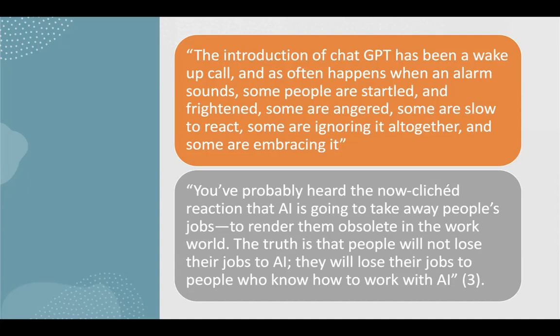Here's another disclaimer that Dobrin gives us. He says you've probably heard the now clichéd reaction that AI is going to take away people's jobs, to render them obsolete in the work world — and I think the 'them' there is all people. But the truth is that people will not lose their jobs to AI. They will lose their jobs to people who know how to work with AI. And so the people who are most prepared to use these tools, who know how they work and know the direction of where they're going — those are the people who are going to be employed in the future.